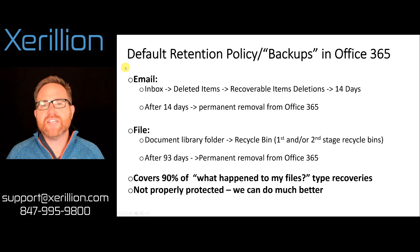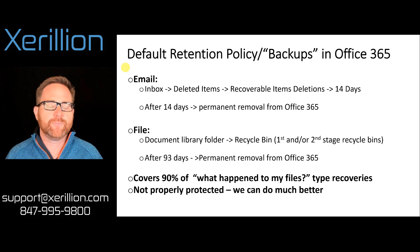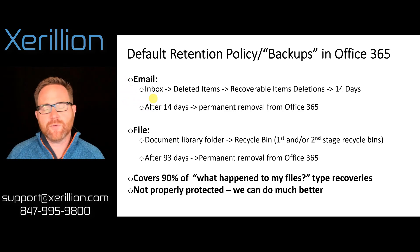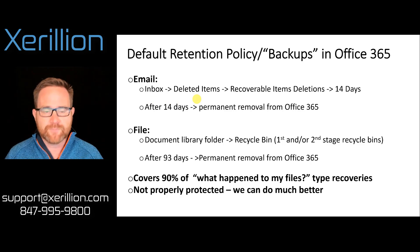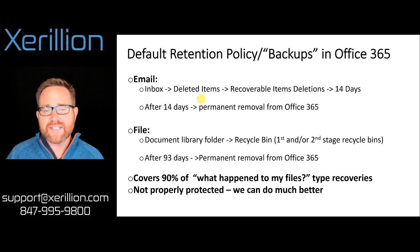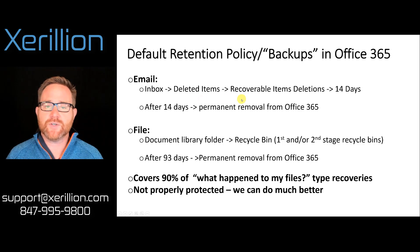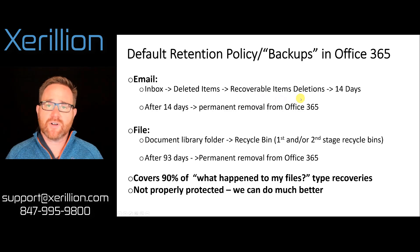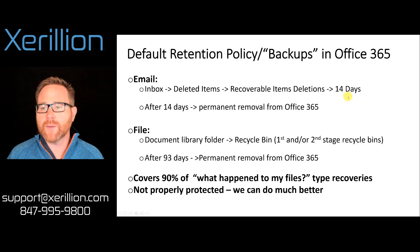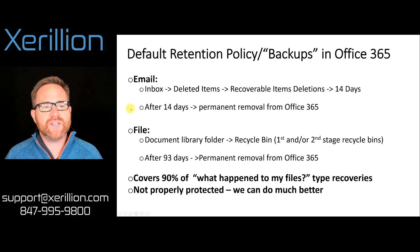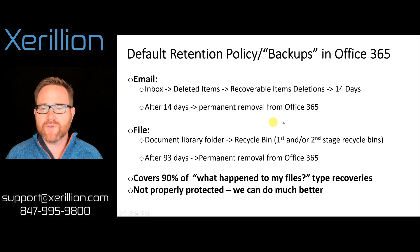Let's talk about the default retention policy or backups that you get out of the box in Office 365. With email, it works like this: we have an inbox, and if we delete an email out of the inbox, that goes into the deleted items subfolder. If we delete it out of the deleted items subfolder, it goes into a special recoverable items folder — a subfolder called deletions — and there it will stay available to recover for up to 14 days. After 14 days, it'll be permanently removed from Office 365.